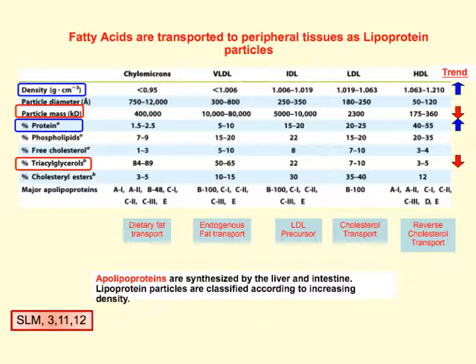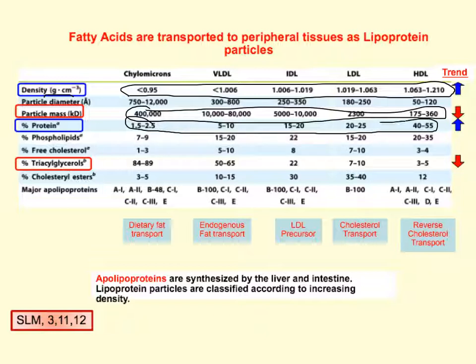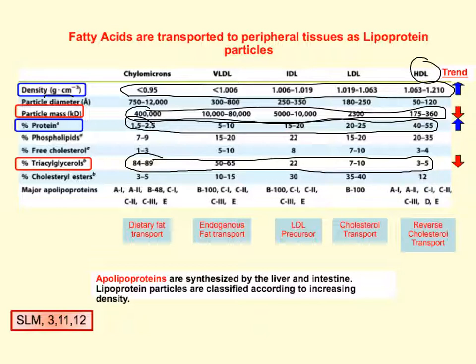There's a trend across the lipoprotein classes: chylomicrons, VLDL, IDL, LDL, and HDL. Density increases across the chart while particle mass decreases. The percent of protein increases — so more protein means higher density — and the percent of triglycerides decreases. HDL has a lot of protein and low triglyceride, while LDL has less protein and more triglycerides.